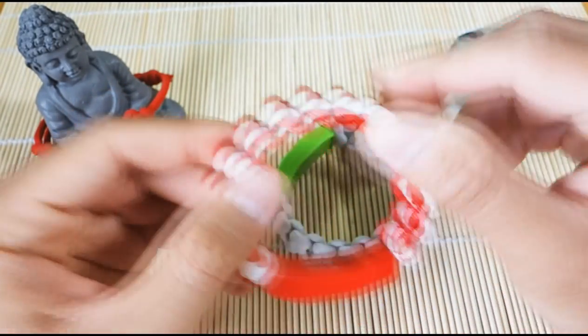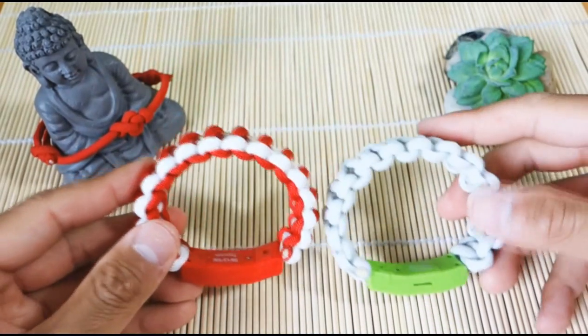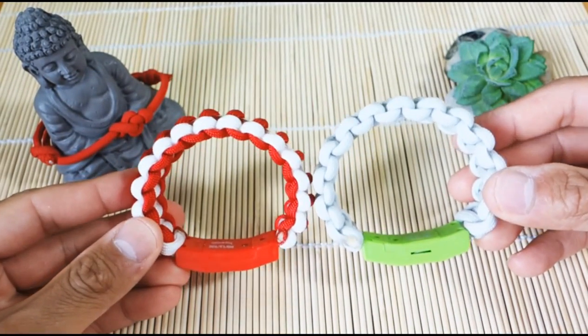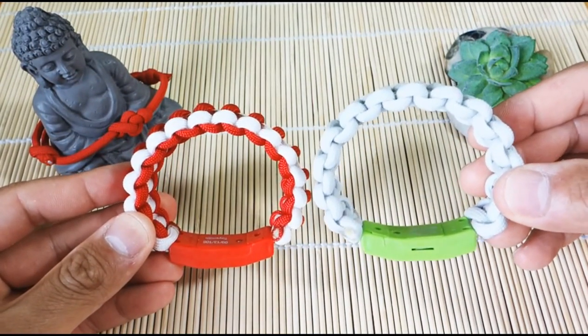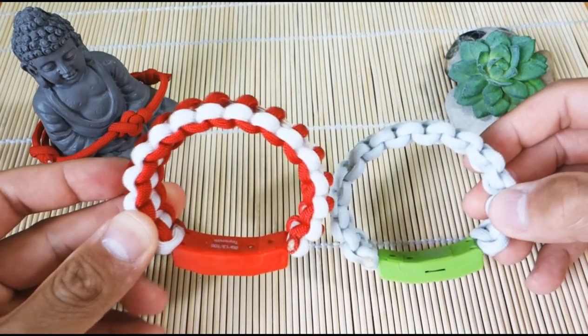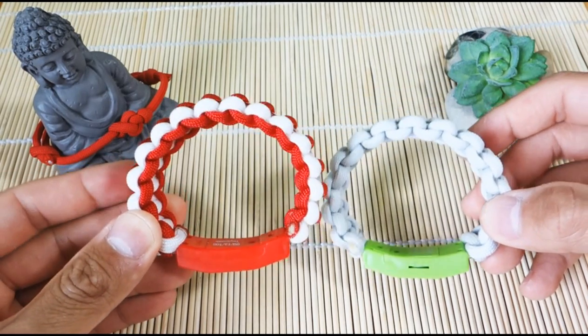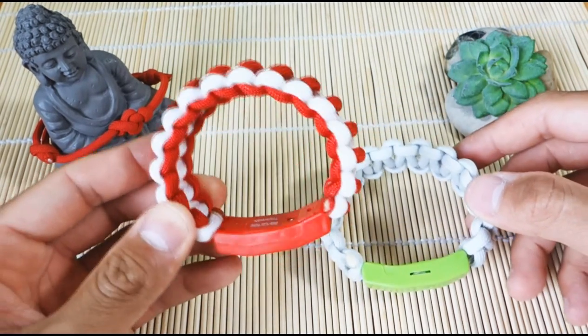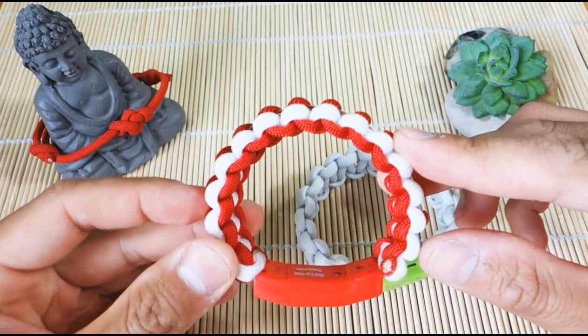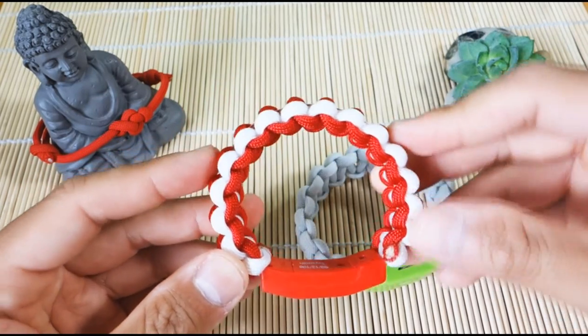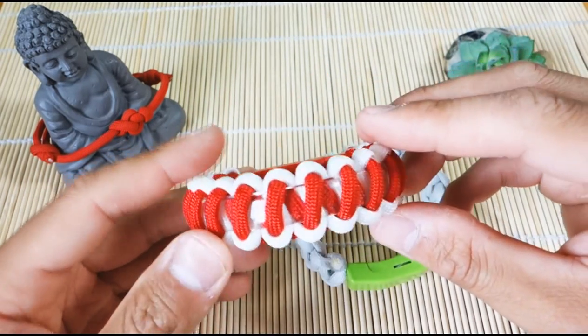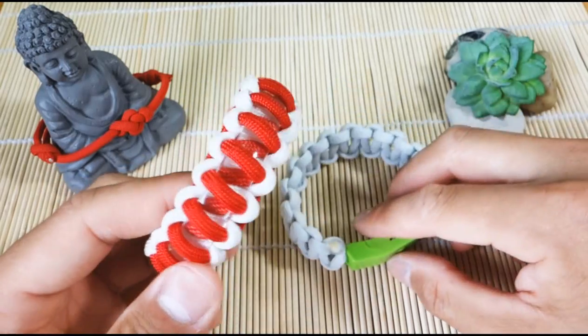But what I did notice was just due to the nature of the weave, the bracelet ends up a little thicker. So as you can see, this one actually is a bit bigger. Now this one became smaller because of the thickness of the paracord. So this one does still fit me, but it is very tight and to the point where it's almost not that comfortable. But of course, it would fit a child, no problem.